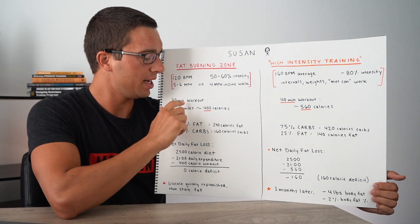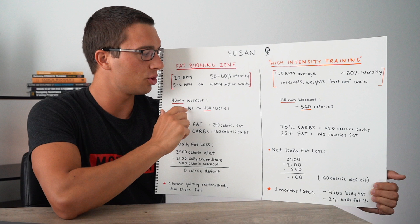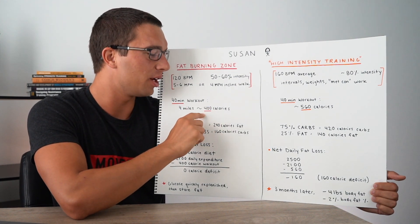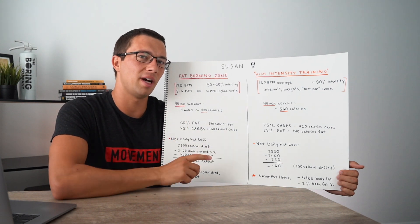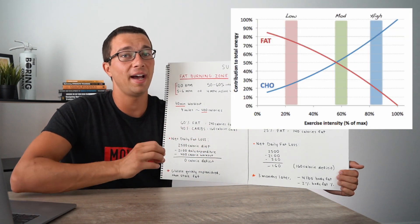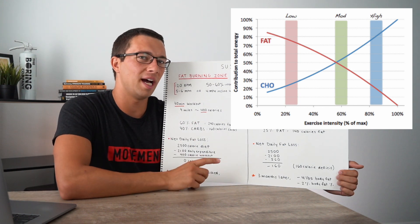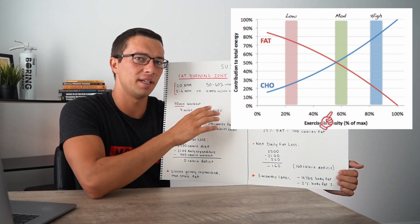So if this is the case, we could estimate that she would have ran about four miles or walked an incline, and either way she would get to around a 400 calorie burn. All right, so knowing that she burned 400 calories, let's look at this graph to see how many of those calories were from fat versus how many were from carbs.